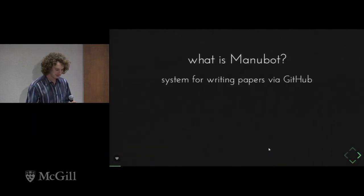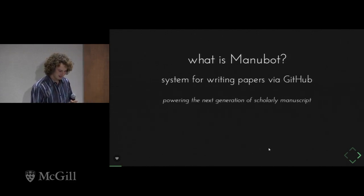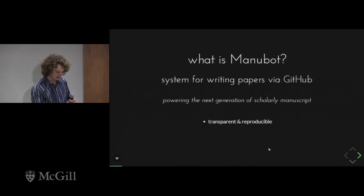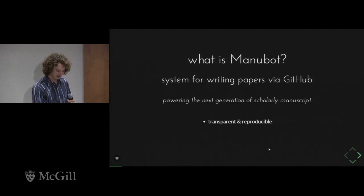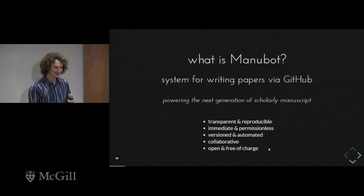So what is Manubot? It's a system for writing papers using Git and GitHub. Our goal is to power the next generation of scholarly manuscripts with a few goals: being transparent and reproducible, having publication be immediate and permissionless, versioned and automated, collaborative and open, and free of charge. We think our prototype achieves these goals to a large extent.